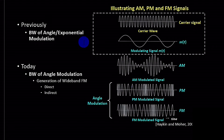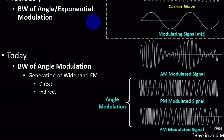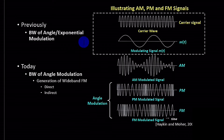In today's discussion we are going to talk about how we generate a wideband FM. We have two specific methods: the first one is the direct method and the second one is the indirect method. Previously we discussed a little bit about the direct method. The indirect method deals with the generation of narrowband FM first, and using that narrowband FM we would then present the methods by which we can generate a wideband frequency modulated signal.